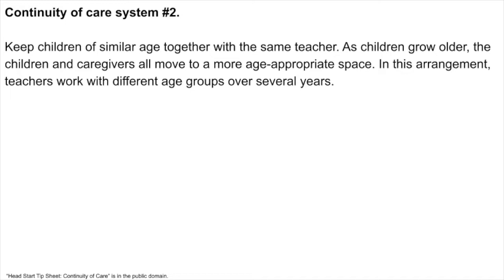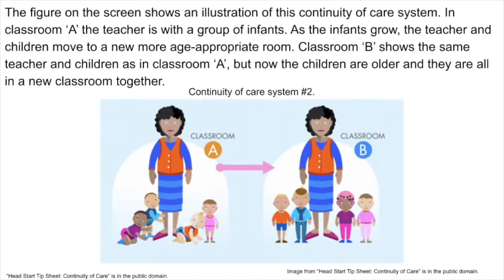The second system: keep children of similar age together with the same teacher. As children grow older, the children and caregivers all move to a more age-appropriate space. In this arrangement, teachers work with different age groups over several years. The figure on the screen shows an illustration of this system. In classroom A, the teacher is with a group of infants. As the infants grow, the teacher and children move to a new, more age-appropriate room. Classroom B shows the same teacher and children, now older, in a new classroom together.